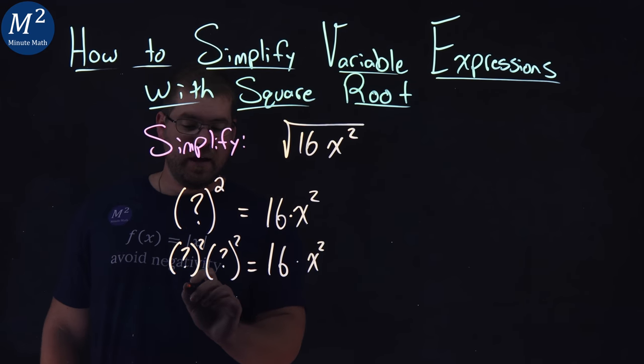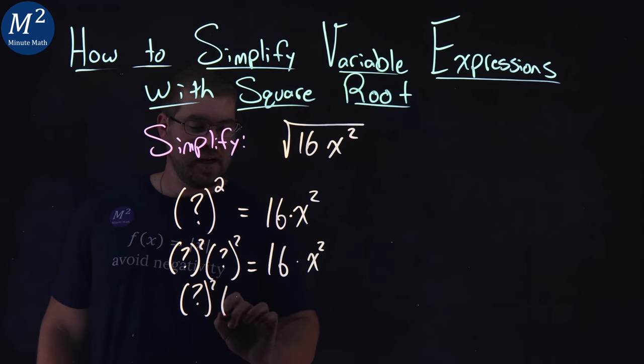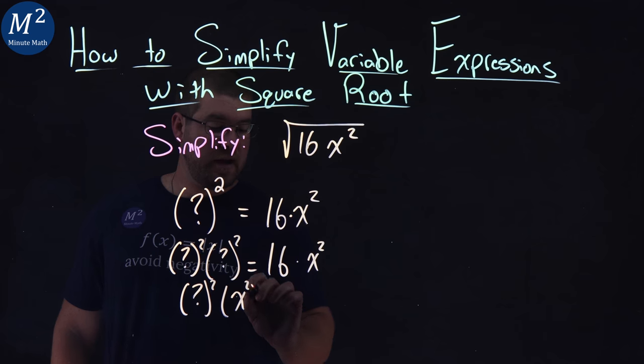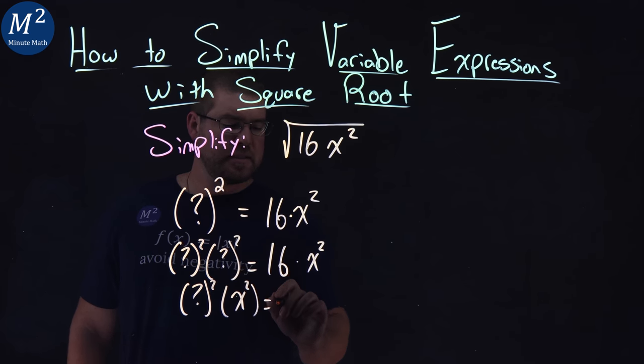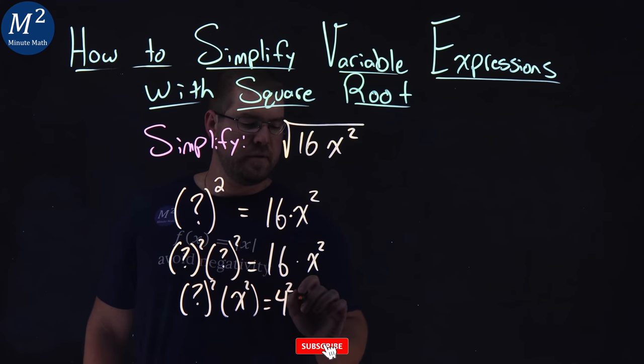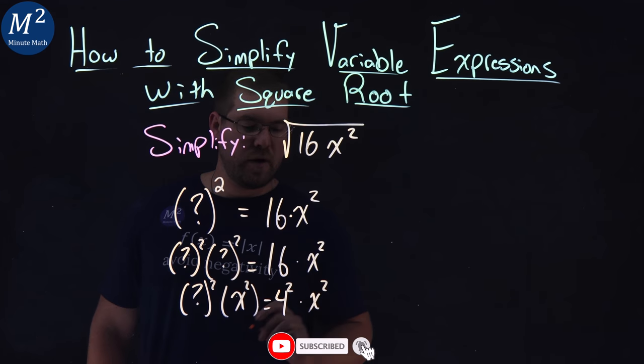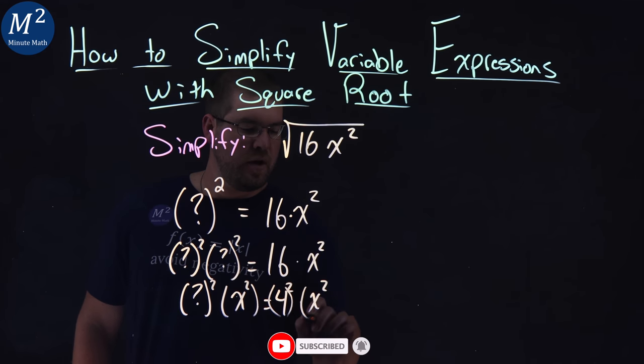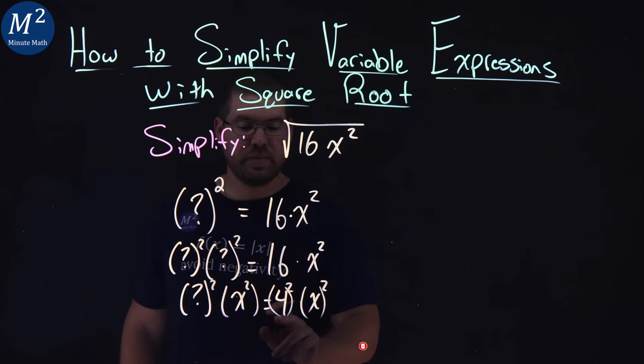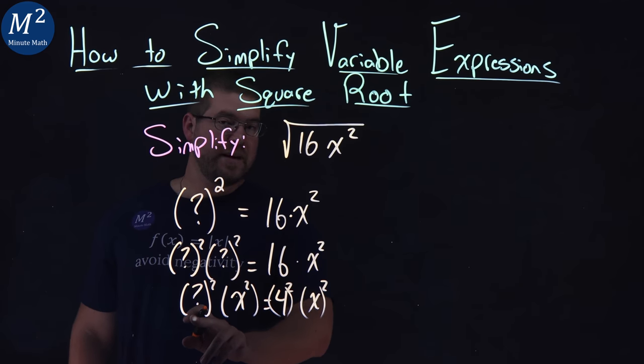Well, if we rewrite this again, what squared times x squared, we got that lined up for the x part. 16 is a 4 squared times an x squared. A little parentheses there make it a little easier to see. So 4 is what is missing here.